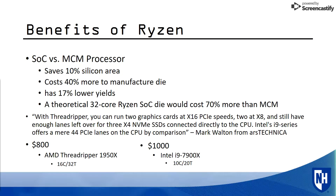The benefits of Ryzen can be seen when comparing multi-chip modules versus system-on-chips or single dies. Processors with a single die save about 10% in silicon area, but cost about 40% more to manufacture. Also, given the larger dies, they have about 17% lower yields. A theoretical 32-core Ryzen system-on-chip die would cost a massive 70% more than creating the die as a multi-chip module.